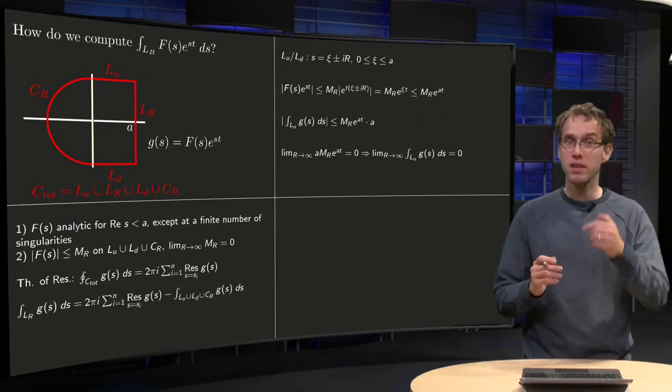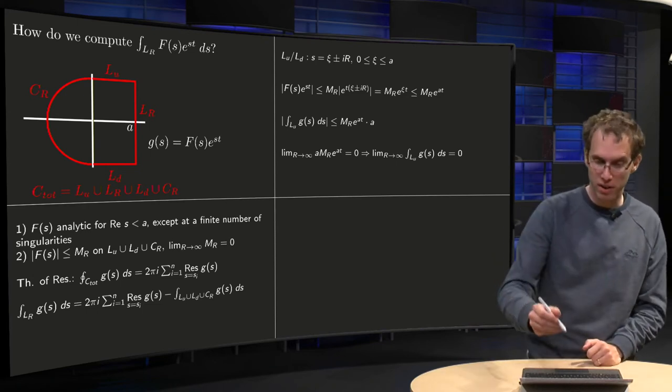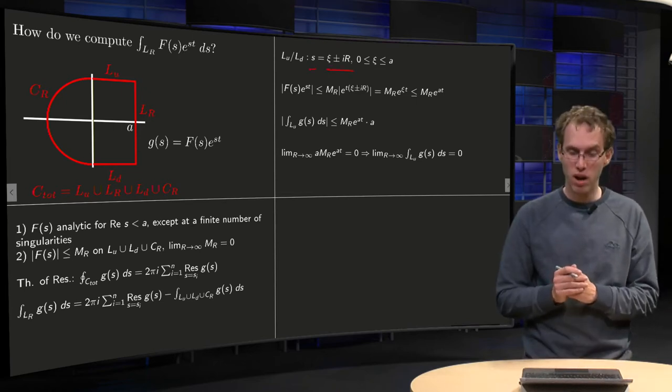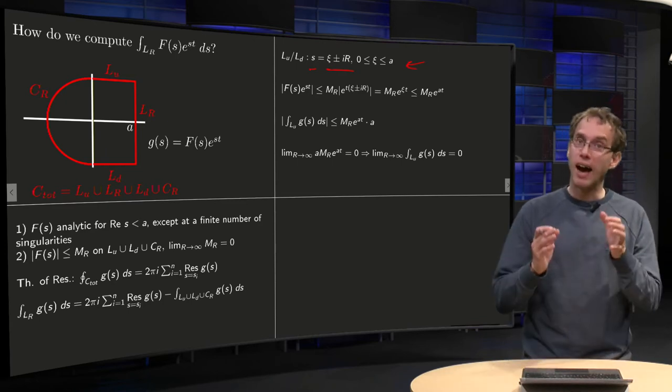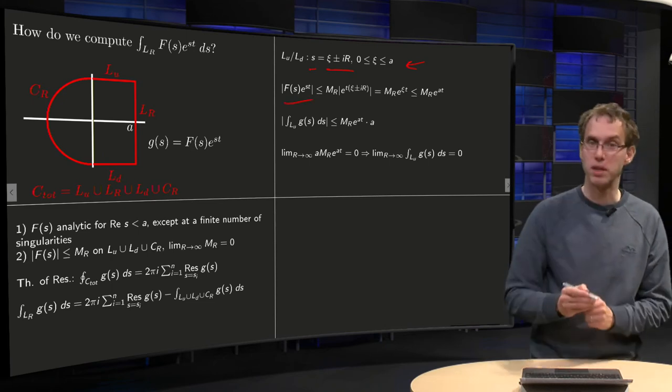Well, for the L_up and L_down, we can use an ML estimate. On the L_up and L_down, we can parameterize s equals ξ plus or minus i times R, for ξ between 0 and a, and it means that our function G(s) equals F(s) times e^(st).